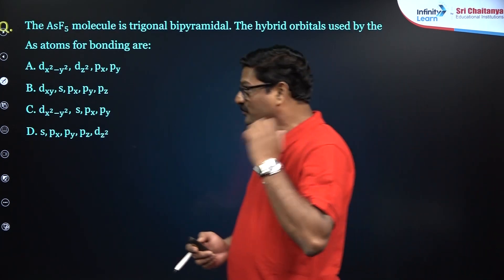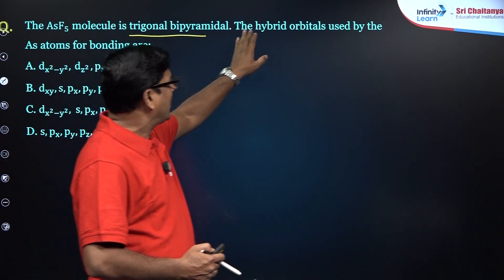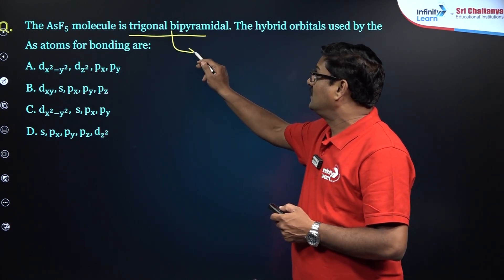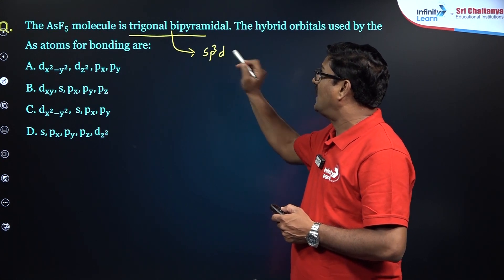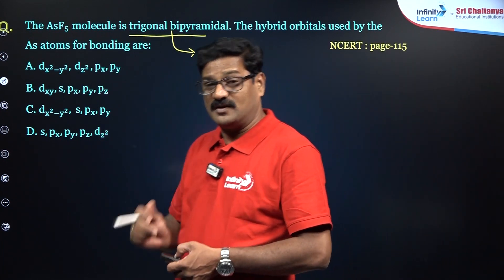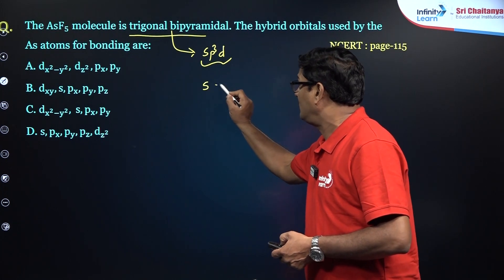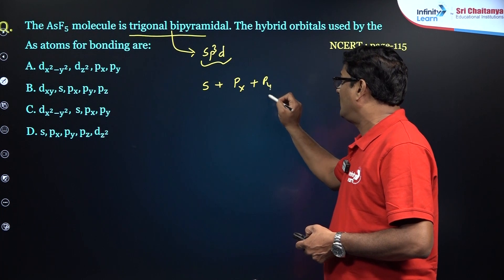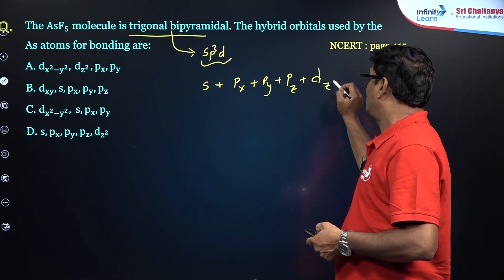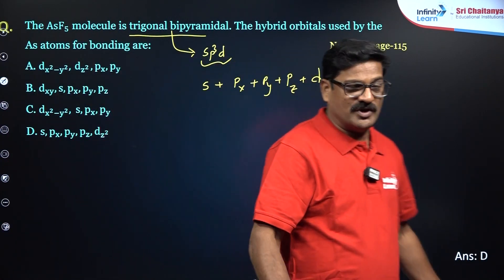Here is a very important question: the AsF5 (arsenic pentafluoride) molecule is trigonal bipyramidal. The hybrid orbitals used by the central atom are — since the geometry is trigonal bipyramidal, it is SP3D hybridization. Referring to NCERT page 115, for SP3D hybridization the orbitals used are one S, one PX, one PY, one PZ, and one DZ² orbital. The correct option matches with D.